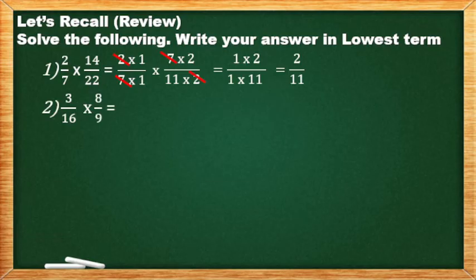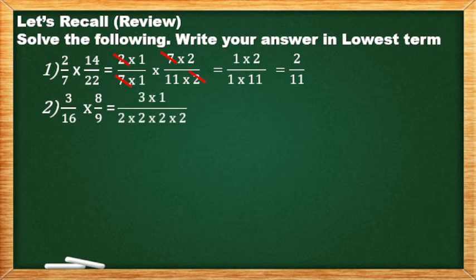Number 2: 3/16 times 8/9. The prime factor of 3 is 3×1. How about 16? The prime factor of 16 is 2×2×2×2, which is 16. So 4 times you multiply 2 by itself.